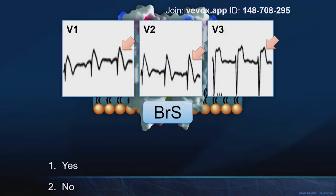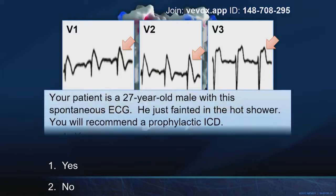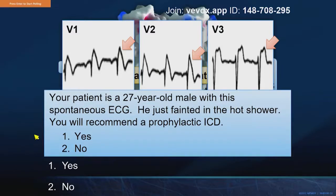When you encounter a patient brought to your attention by this ECG, I want you to have this type 1 Brugada ECG pattern seared into your mind's eye. Here's somebody with this ECG — exhibit A. He's 27, gives us this ECG spontaneously. You did not need to move the leads up the chest. You did not need to give an ajmaline challenge in Europe or a procainamide challenge in the United States. He just fainted in the hot shower. Will you recommend a prophylactic ICD as part of his treatment? Yes or no.